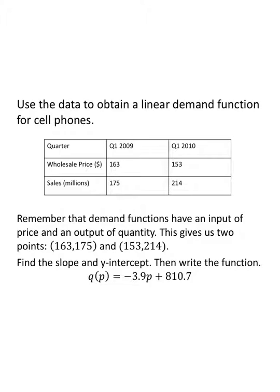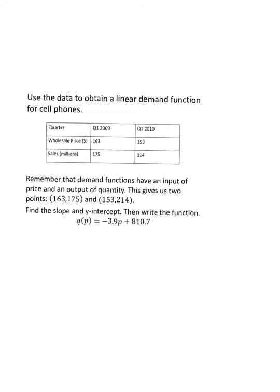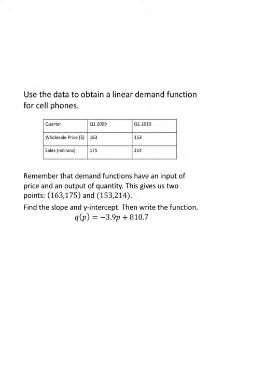The demand functions have an input of price and an output of quantity. So 163, 175 is our first point. 153, 214 is going to be our second point. So I'm going to find the slope. So our slope is 214 minus 175 over 153 minus 163. And this is going to be, let me see, 175. If I give it 25 more, I'm at 200. So 25 and 14. That's the negative. That's not negative. That's the positive 39. 153 minus 163 is a negative 10. And that's how I get my slope to be a negative 3.9.